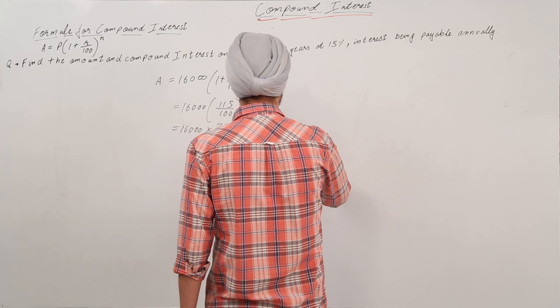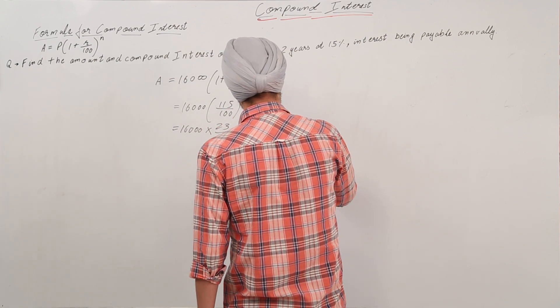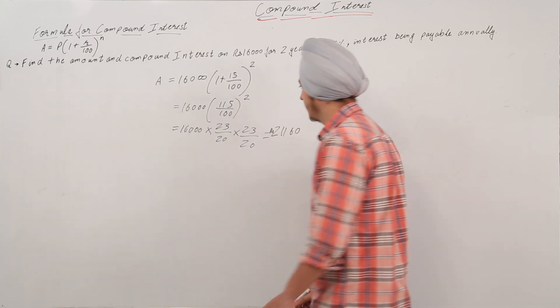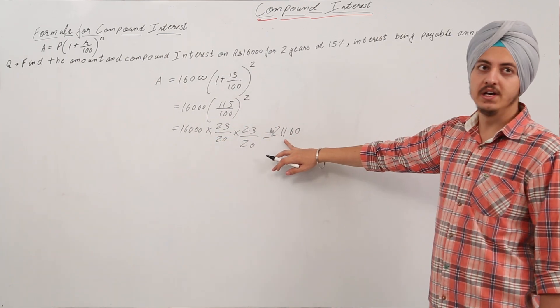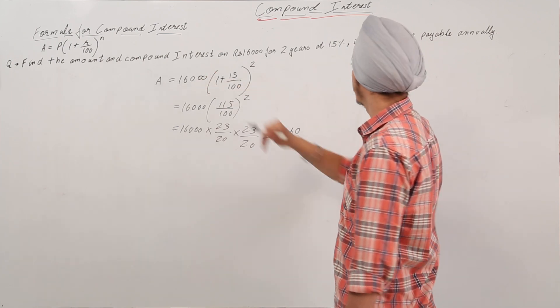Now this amount comes out to be equal to 21,160 rupees. So this is rupees 21,160, this is the total amount. So how do we calculate the compound interest?